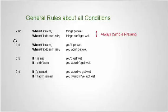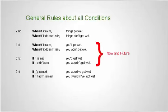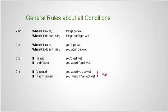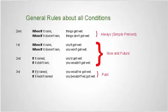The zero and the first condition are real situations. The second and the third condition are hypothetical situations. The zero condition is talking about what always happens — it's in the simple present. The first and second are both about now and the future: one is real, one is hypothetical. And the last one is the past — the third condition is only the past. As you can see, we have a full spectrum of spoken English here.